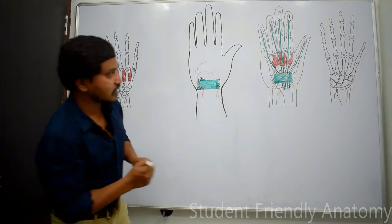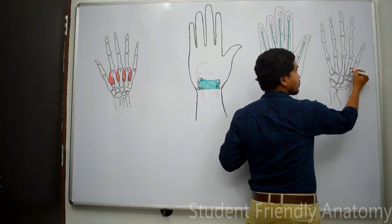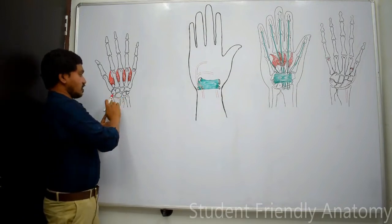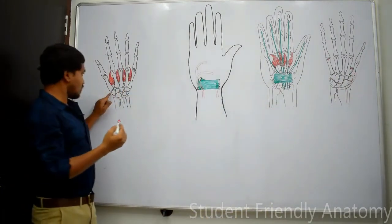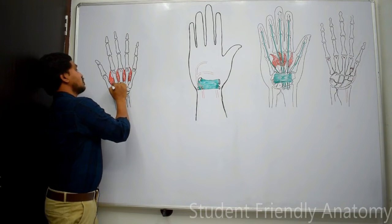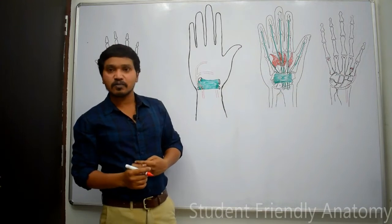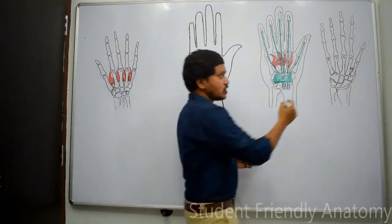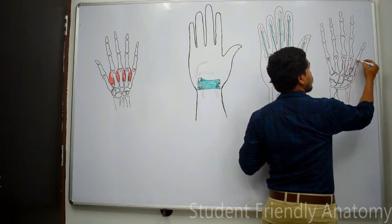In the dorsal aspect of the skeleton of the hand, the radial artery passes through the gap between the two heads of the first dorsal interosseous and enters the palmar aspect. As soon as it enters the palm, it lies between the two heads of adductor pollicis — the transverse head and the oblique head.